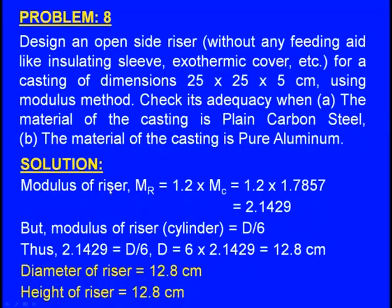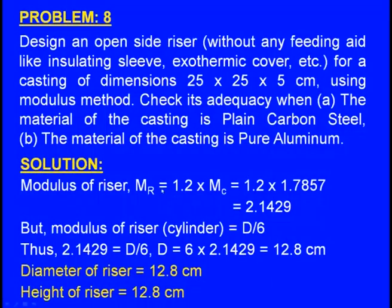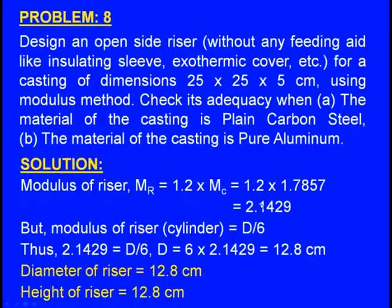Now we need to find the modulus of the riser. When designing the riser using the modulus method, the modulus of the riser should be 1.2 times the modulus of the casting. Thus, Mr = 1.2 × Mc = 1.2 × 1.7857 = 2.1429.